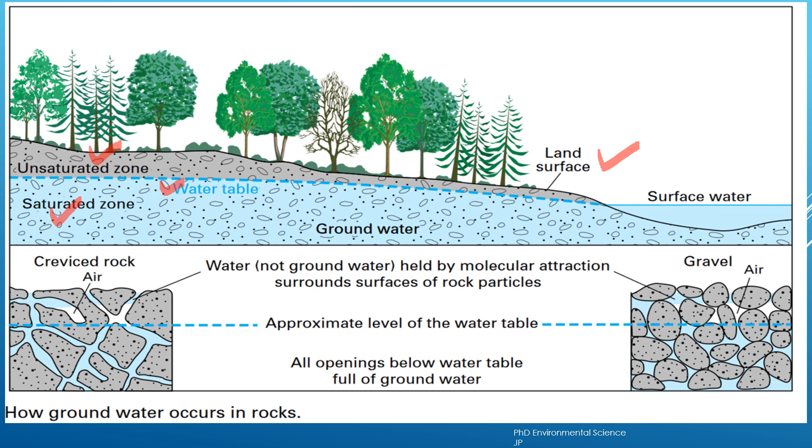Surface water is water found on the land surface, such as in rivers, lakes or ponds.